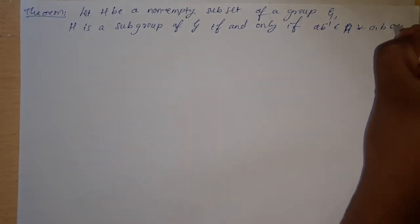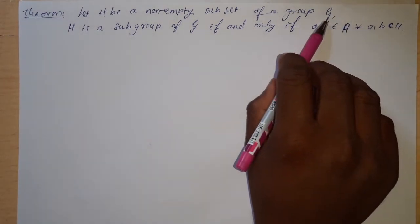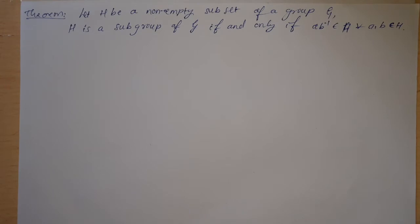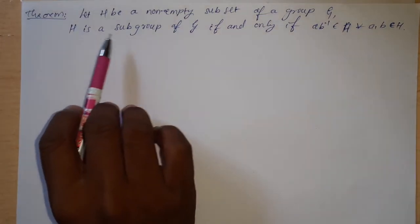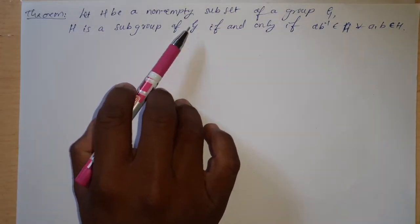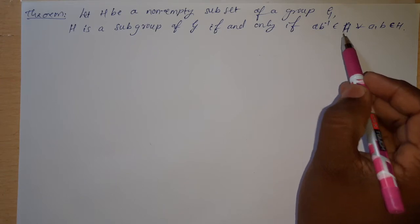Here it is given that G is a group, meaning it satisfies all four laws: closure law, associative law, identity law, and inverse law. H is a subset of G, meaning all elements of H belong to the group G. We need to show that H is a subgroup of G if and only if the condition AB inverse belongs to H is satisfied.